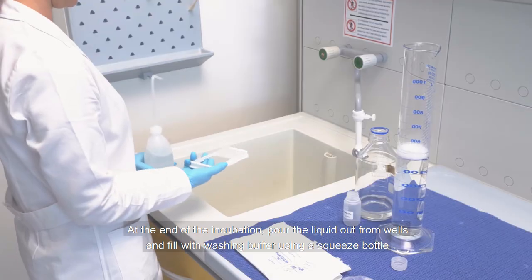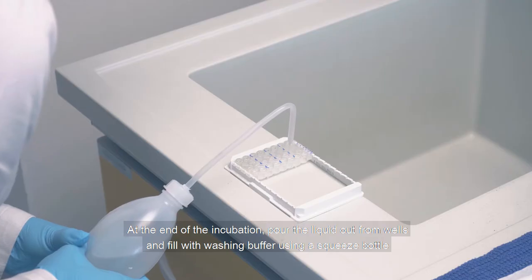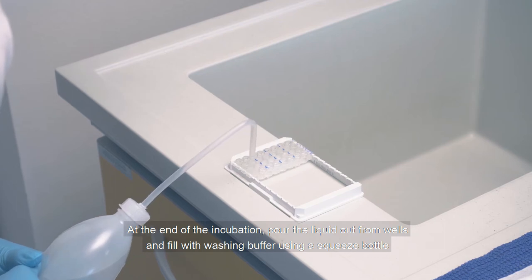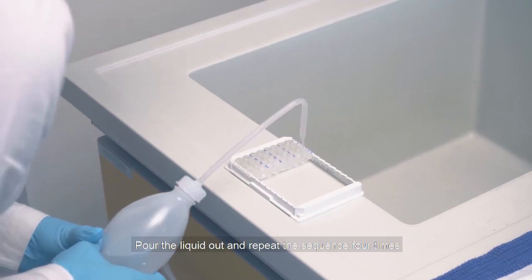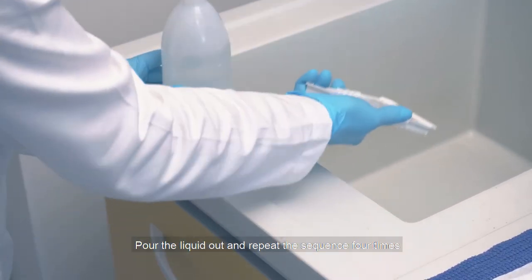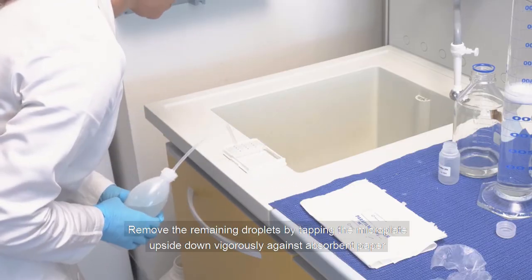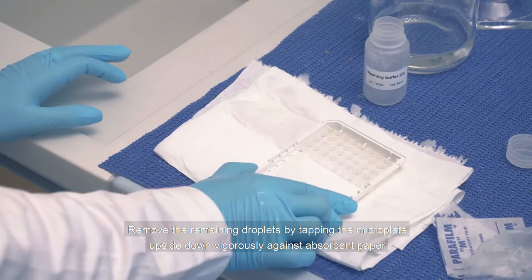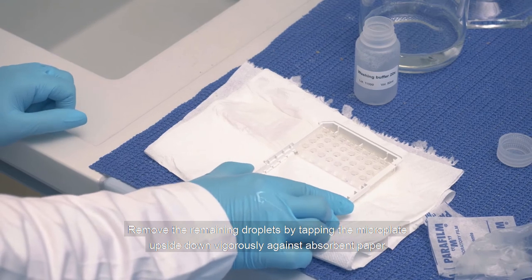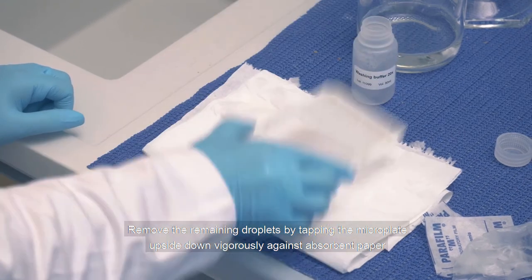At the end of the incubation, pour the liquid out from the wells and fill with washing buffer using a squeeze bottle. Pour the liquid out and repeat the sequence 4 times. Remove the remaining droplets by tapping the microplate upside down vigorously against absorbent paper.